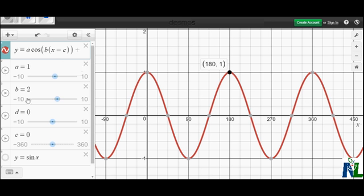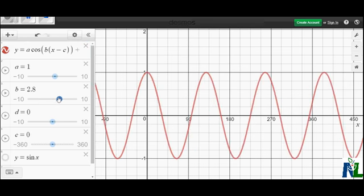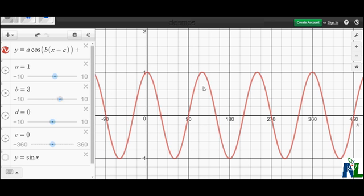If the value of b is 2, then the period here is 180, or 360 divided by 2. If the b value is 3, then the period here is 120, or 360 divided by 3, and so on.